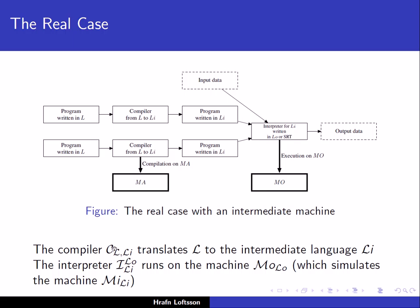What we have here is a compiler C_L_LI — a compiler that translates L into the intermediate language LI. Then we have the interpreter I_LI_LO — an interpreter that interprets the language LI, implemented in the language LO. This interpreter runs on the abstract machine MO, and this machine thus simulates the machine MI_LI. Implementing the machine MI_LI is done by writing the interpreter in the language LO on the abstract machine M_O_LO.